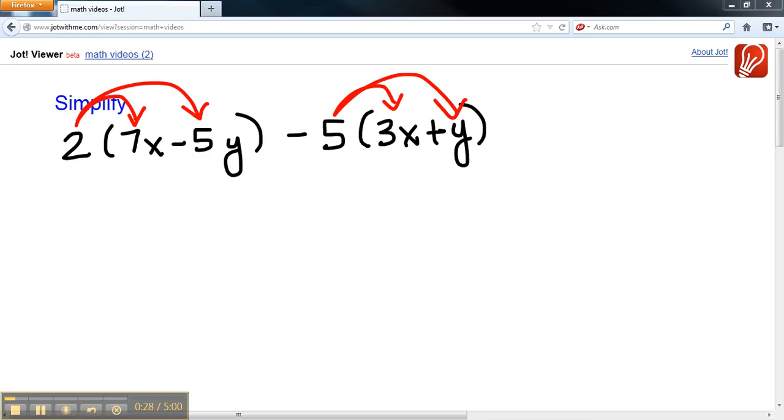So 2 times 7x, 2 times 7 is 14, so we have 14x. 2 times negative 5y, 2 times negative 5 gives us negative 10y. So it gives us 14x minus 10y.